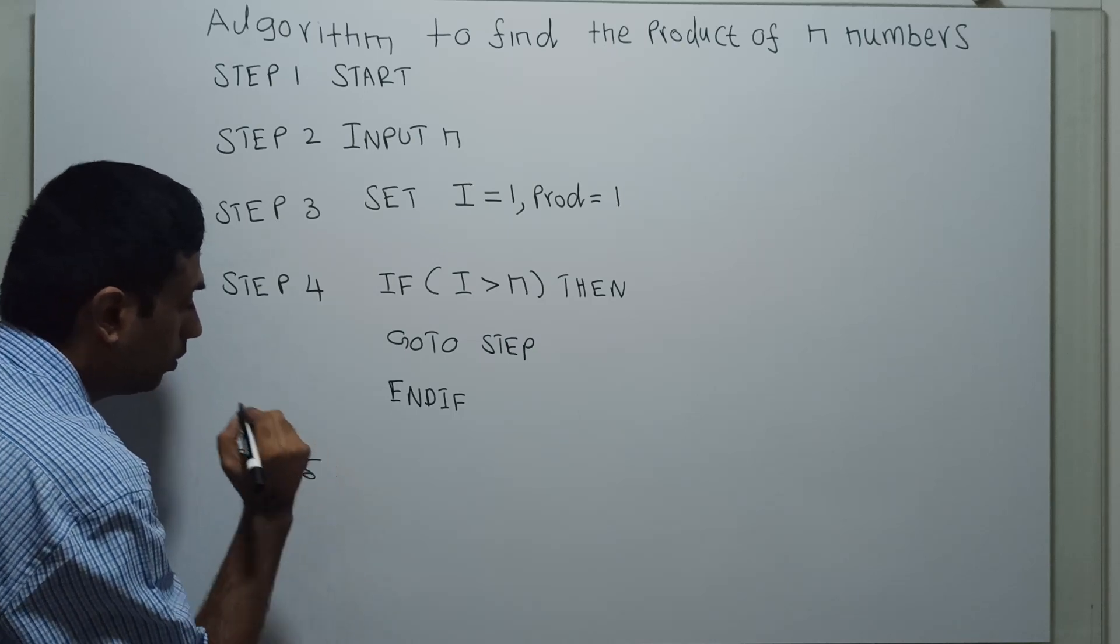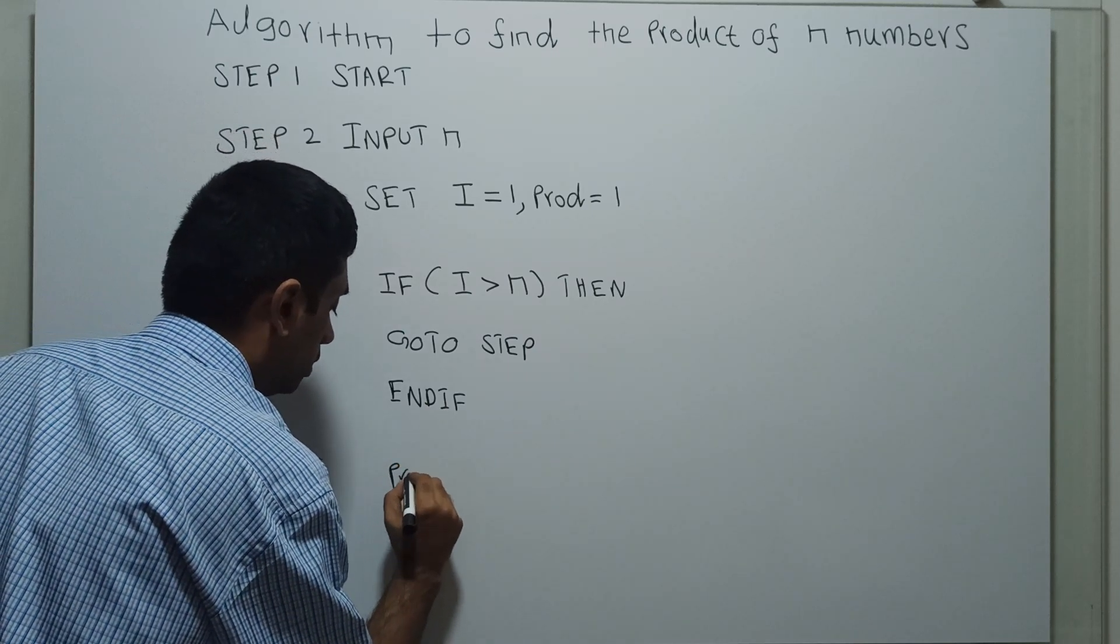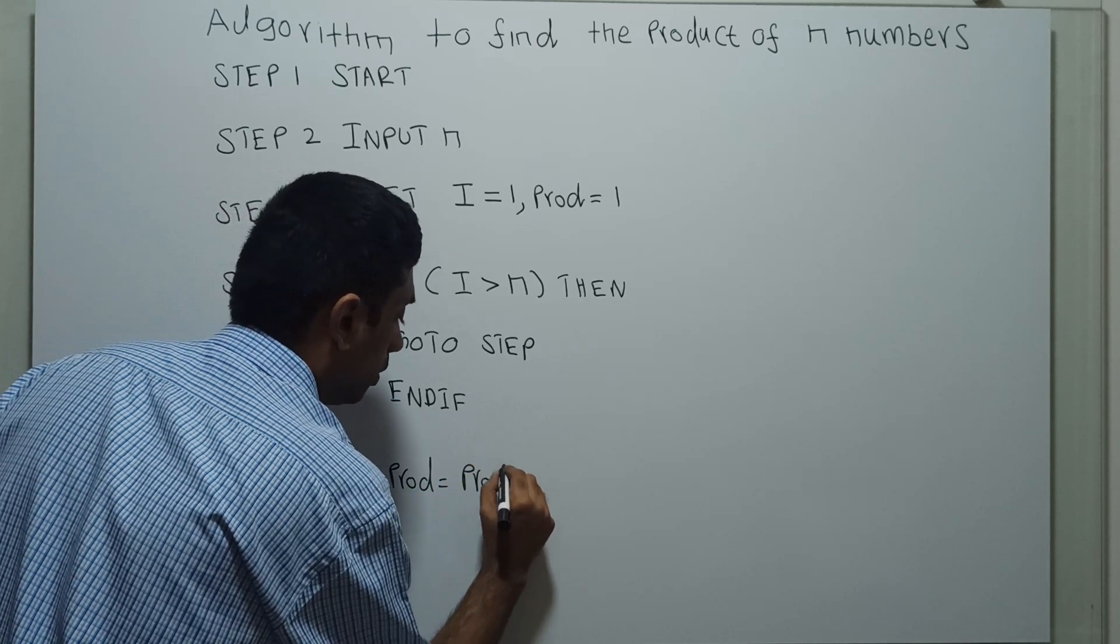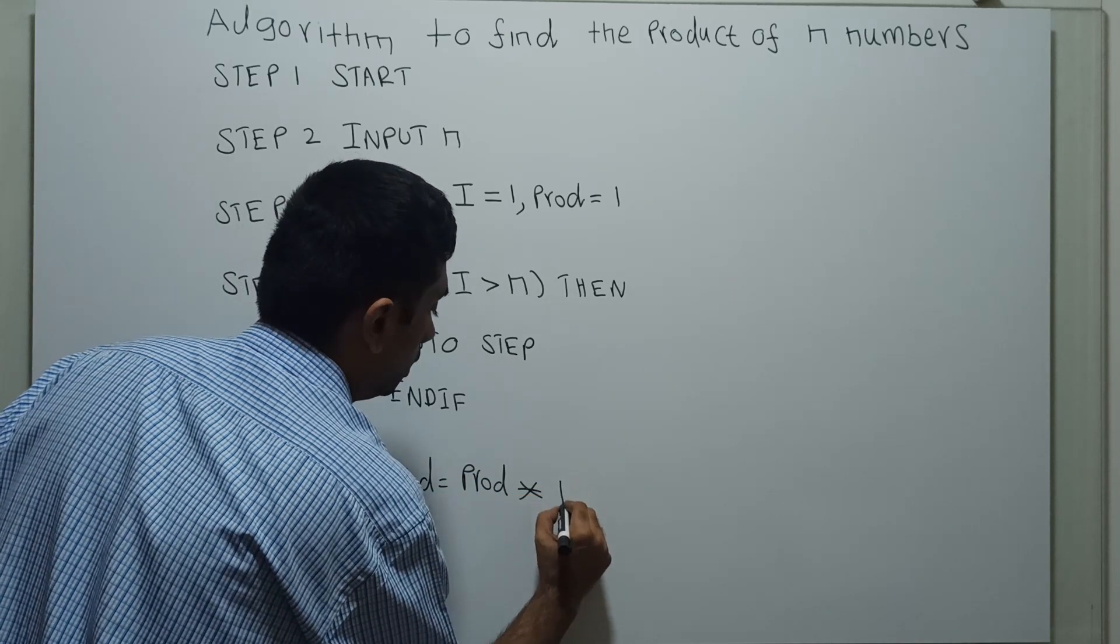Step 5: Product equal to product times i.